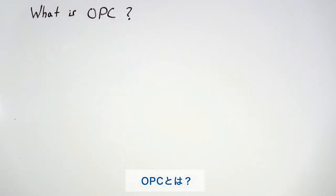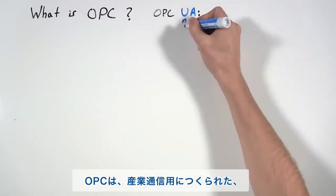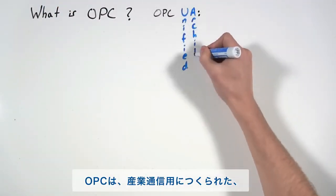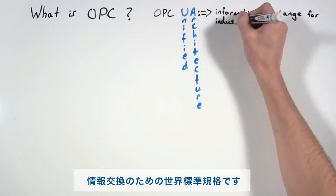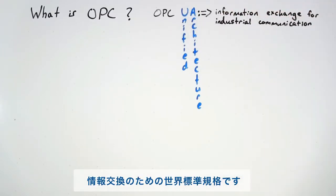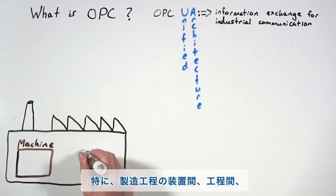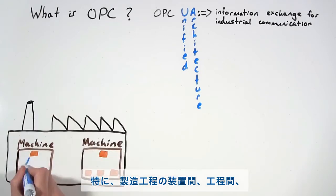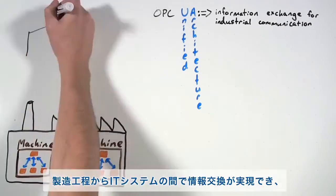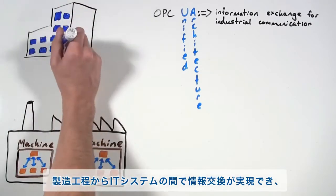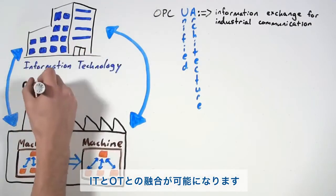What is OPC? OPC UA is an open standard that specifies information exchange for industrial communication, particularly on devices within machines, between machines, and from machines to systems in a convergence of IT and OT.